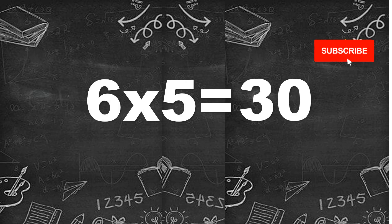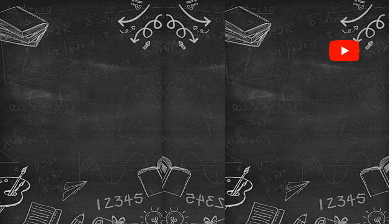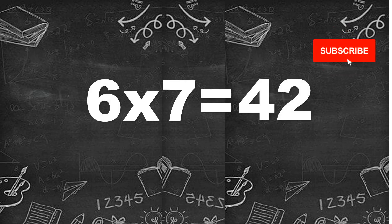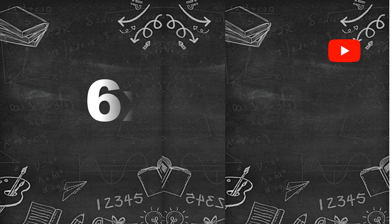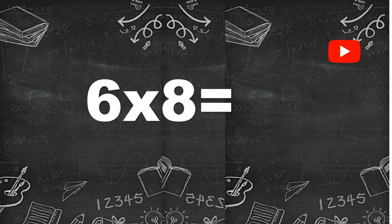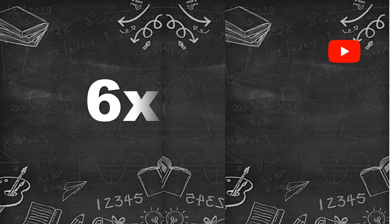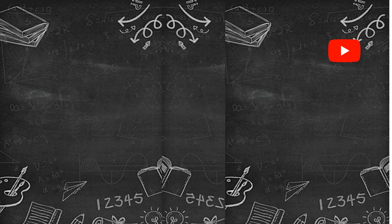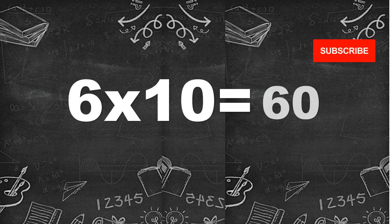6 sixes are 36. 6 sevens are 42. 6 eights are 48. 6 nines are 54. 6 tens are 60.